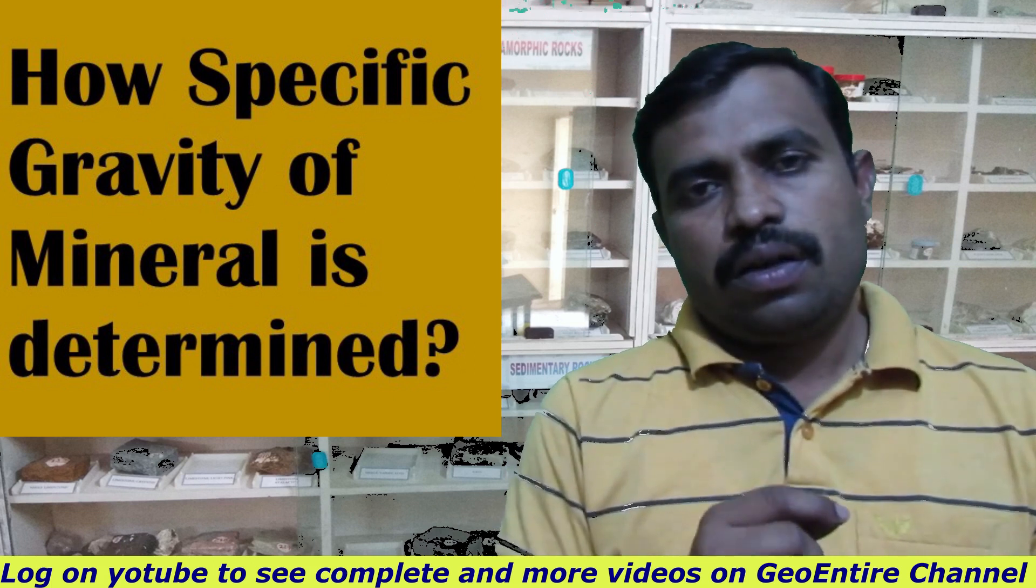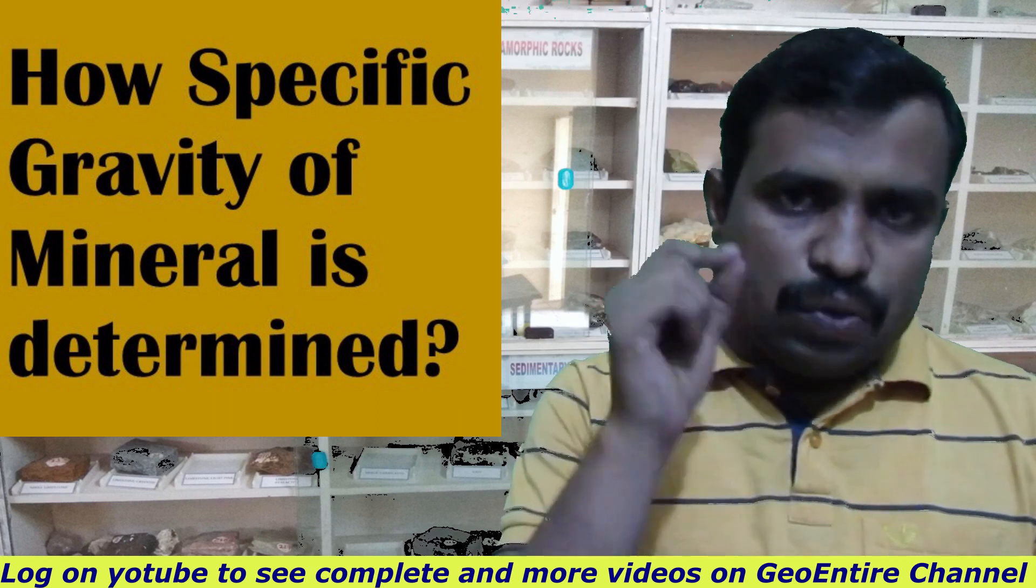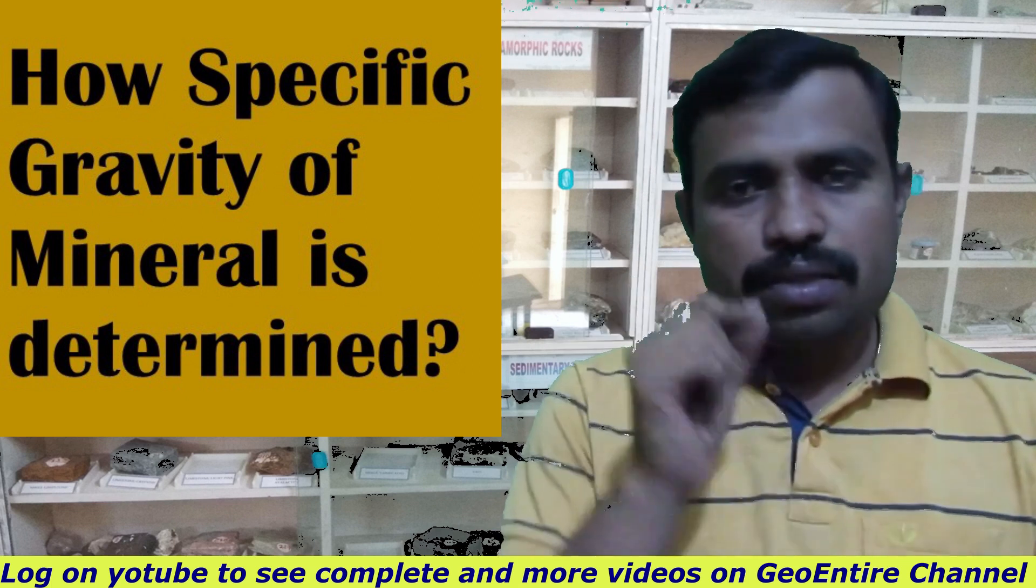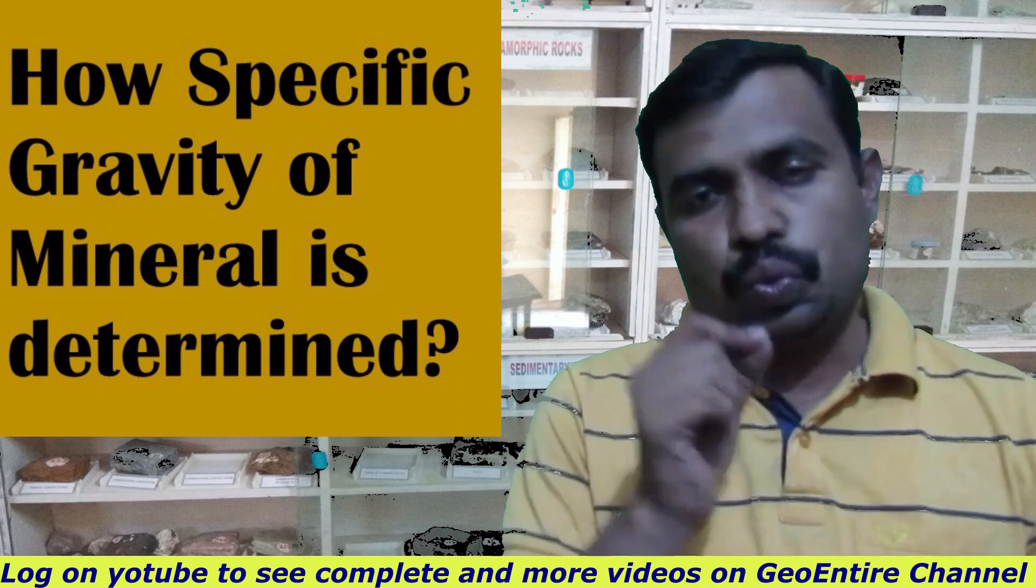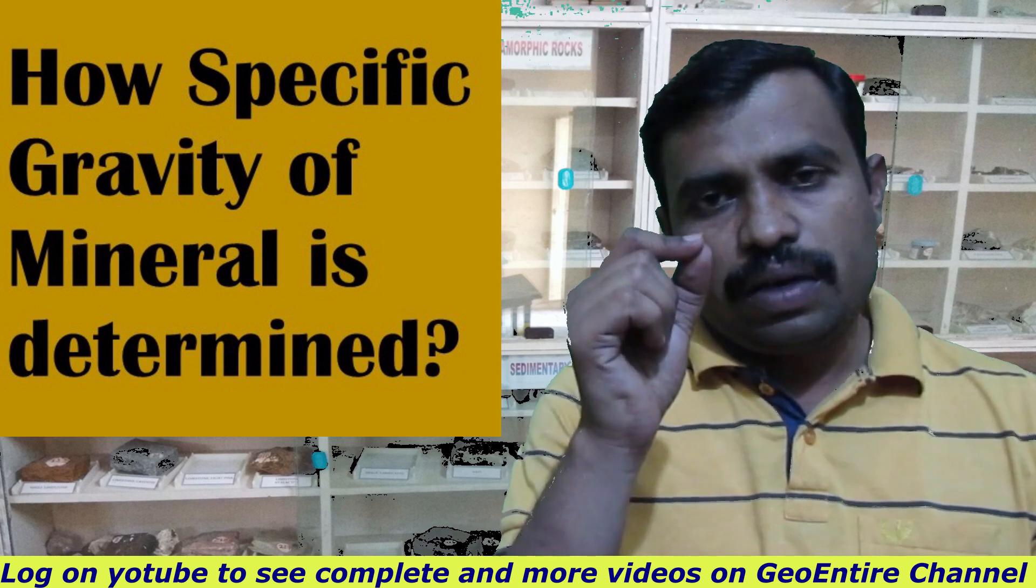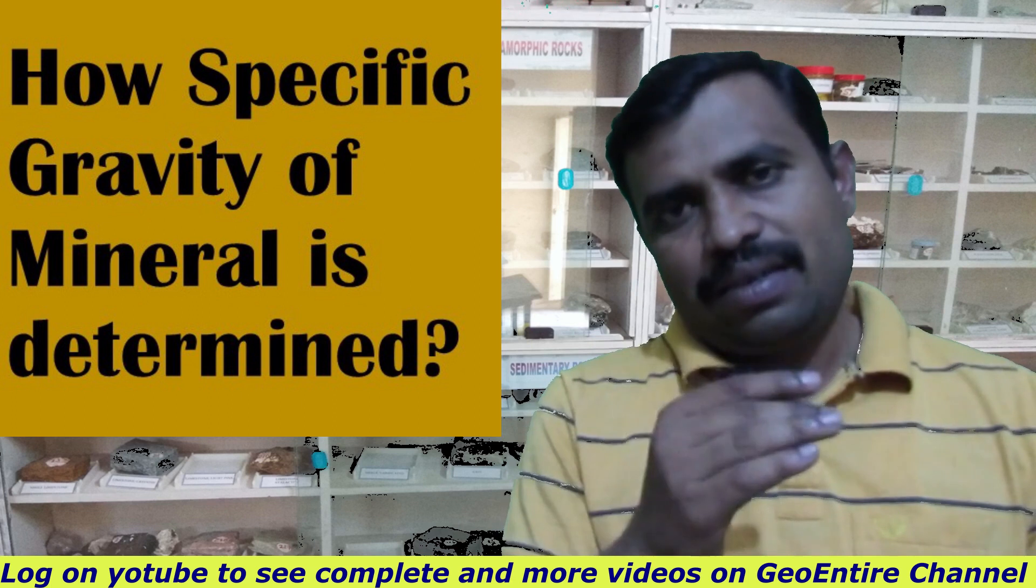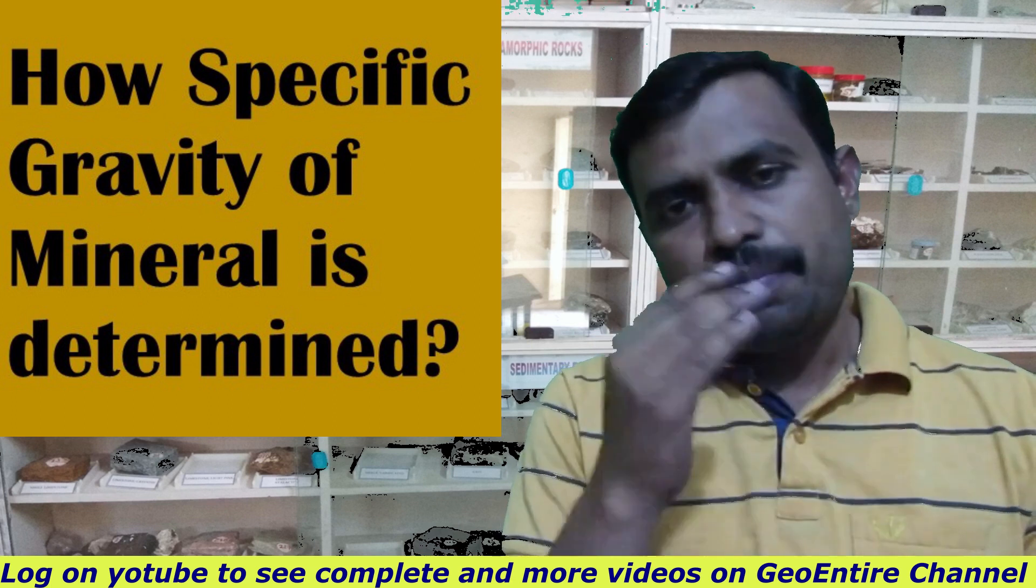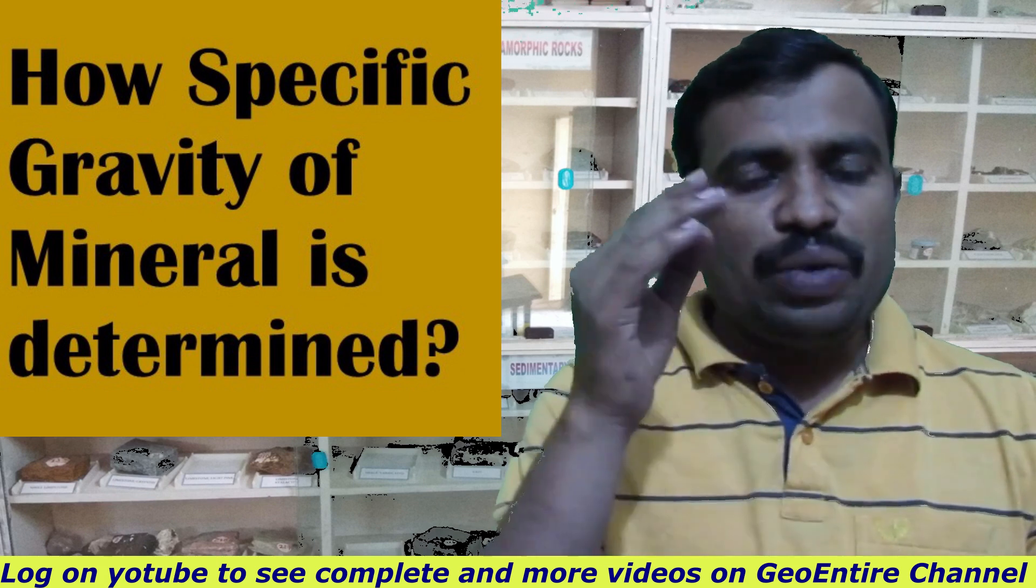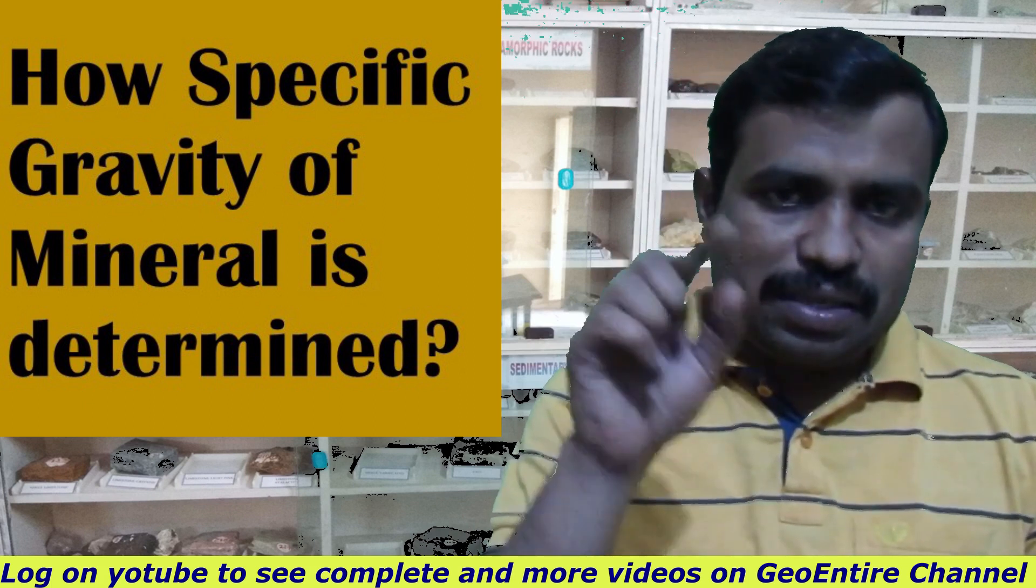Specific gravity is a unitless quantity because it is nothing but the ratio of density. The formula of density is equal to mass by volume and the unit of this density is gram per cubic centimeter. Suppose any mineral has density of 2 gram per cc. When we calculate the specific gravity of that particular mineral, it means 2 divided by 1 and the unit is common, gram per cc. The unit will be cancelled and specific gravity is 2.